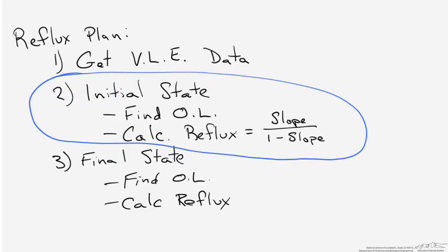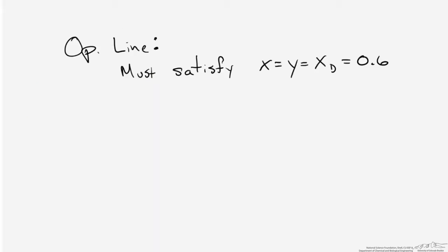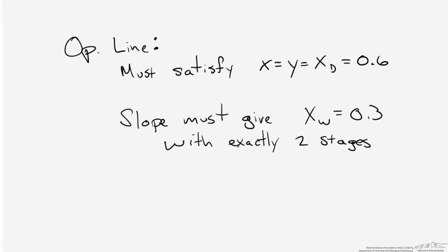With VLE data in hand, we determine the operating line associated with the initial state and calculate the reflux ratio. We know operating lines must satisfy the point x equals y equals the distillate composition of 0.6. The operating line slope must also give us a bottoms composition of 0.3 with exactly two stages. These are the pieces of information we need to determine what operating line satisfies this condition.